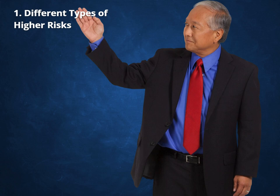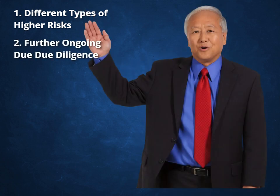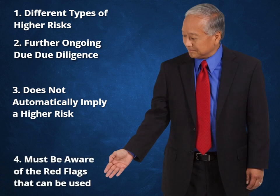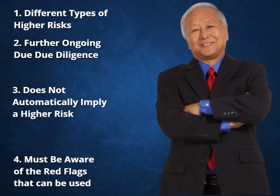The determination that a customer is a PEP is not an aim in itself, but forms part of the process that enables financial institutions and DNFBPs to assess the different types of higher risks related to PEPs. Determining that a customer is a PEP does not absolve financial institutions and DNFBPs of further ongoing due diligence specifically tailored to the fact that the customer is a PEP. Being a PEP does not prejudge a link to criminal activities or equate to being a criminal and or subsequent abuse of the financial system. Similarly, the fact that a person is a domestic or international organization PEP does not automatically imply that he or she poses a higher risk. Financial institutions and DNFBPs need nevertheless to be aware of the risks that a PEP may abuse the financial system, to launder illicit proceeds, and need to be aware of the red flags or indicators that can be used to detect such abuse.